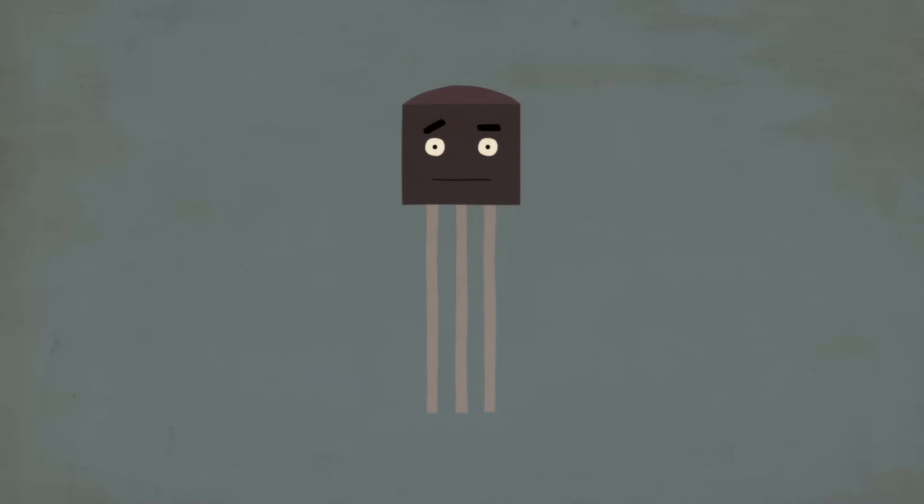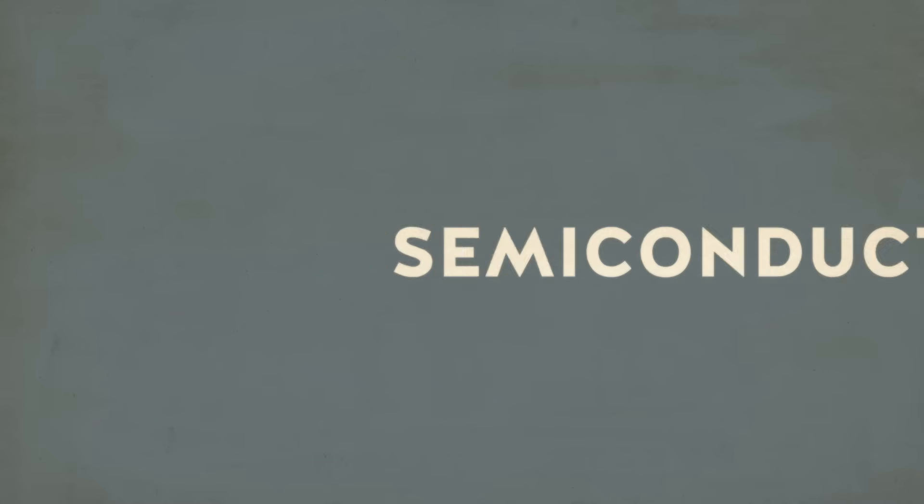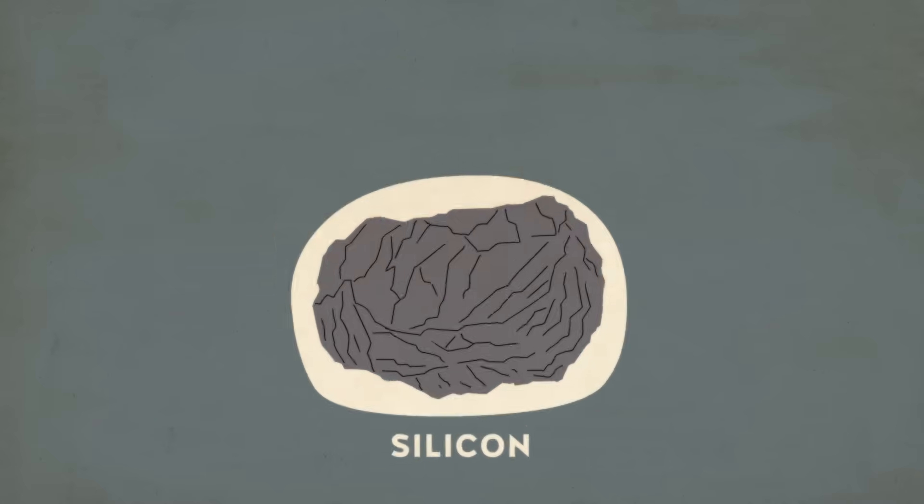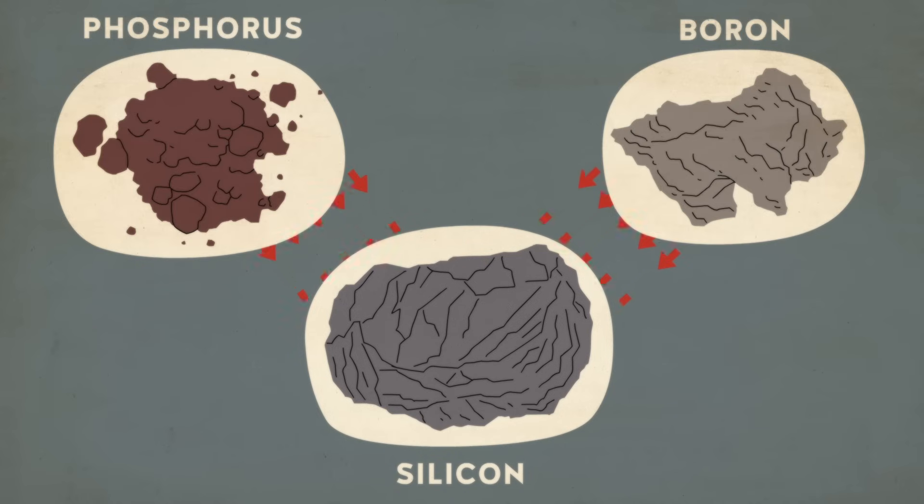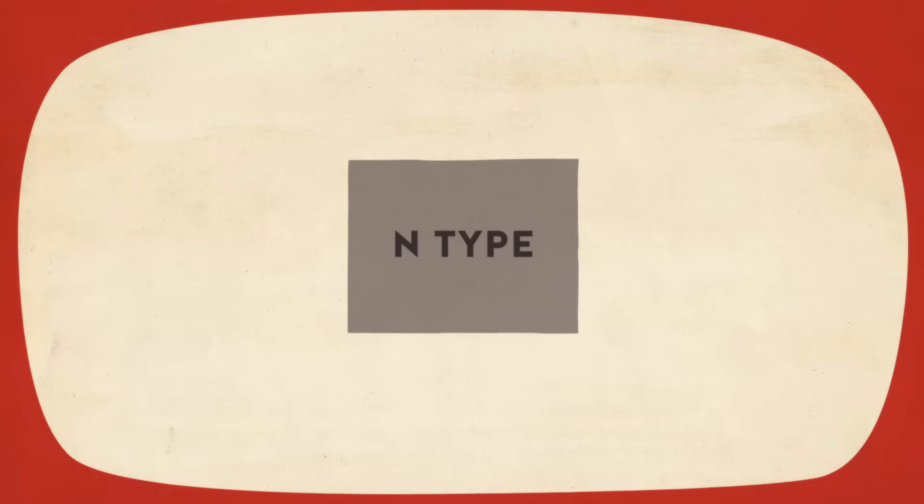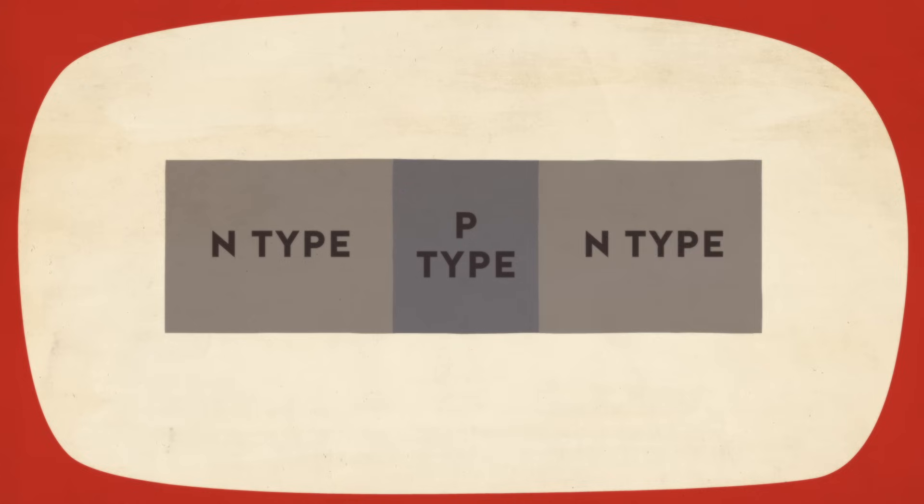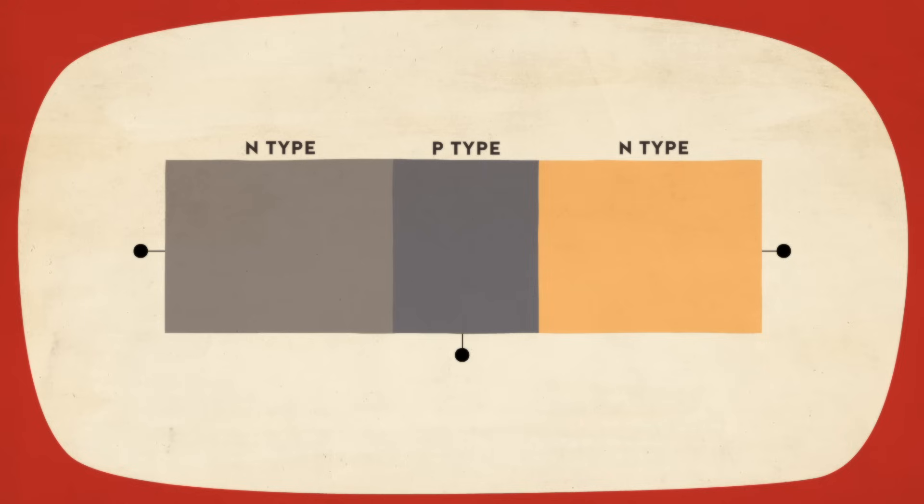The solution was the transistor. Instead of electrodes, it uses a semiconductor like silicon, treated with different elements to create an electron-emitting N-type and an electron-absorbing P-type. These are arranged in three alternating layers, with a terminal at each: the emitter, the base, and the collector.